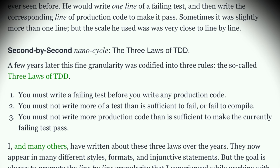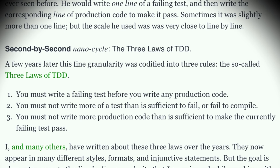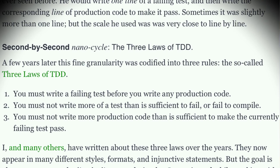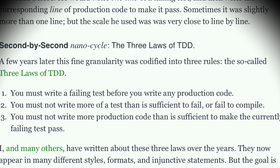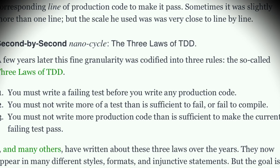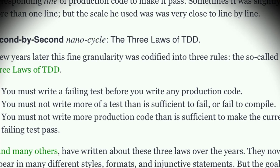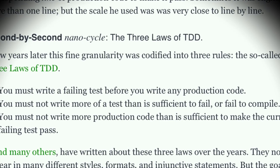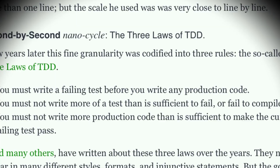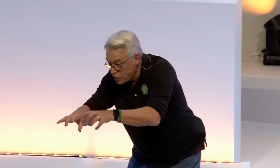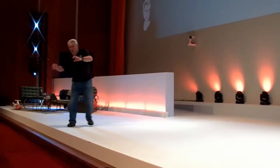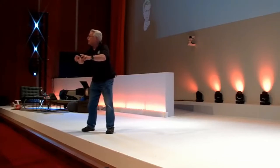And now the third law kicks in. The third law says you are not allowed to write any more production code than is sufficient to pass the currently failing test. So now you're stuck in a loop, and this loop is five seconds long. I've got to write a line of unit test — it doesn't compile. Now I've got to write a line of production code. That made it compile. Another line. This is your life now. Around and around that loop. Five seconds long.